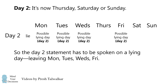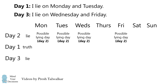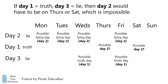So, now we need to figure out which of day 1 or day 3 is the truth day. Let's suppose that day 1 is the truth day, and day 3 is a lie. In order that day 3 be a lie, we would need the possible truth day, which is day 1, to be on either Wednesday or Friday. Now, if the truth day was on Wednesday, and that's day 1, then day 2 would have to be the following day, which is on a Thursday. If it was on Friday, the following day would have to be Saturday. And we have a problem here. Day 2 would have to be on a Thursday or Saturday, which is impossible because day 2 has to be on Monday, Tuesday, Wednesday, or Friday. So, this possibility cannot be true.